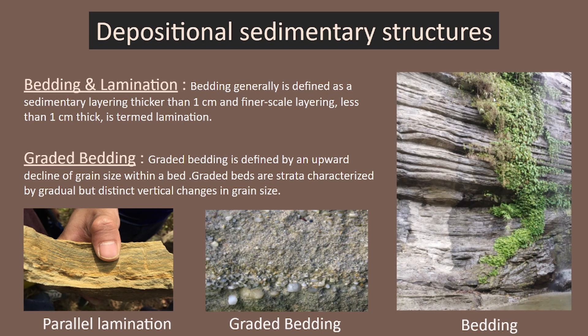Let's study depositional sedimentary structures. Here you can see bedding and here you can see lamination. There is a thickness difference — bedding is generally defined as a sedimentary layer thicker than one centimeter, but lamination is a sedimentary layer that is less than one centimeter in thickness.